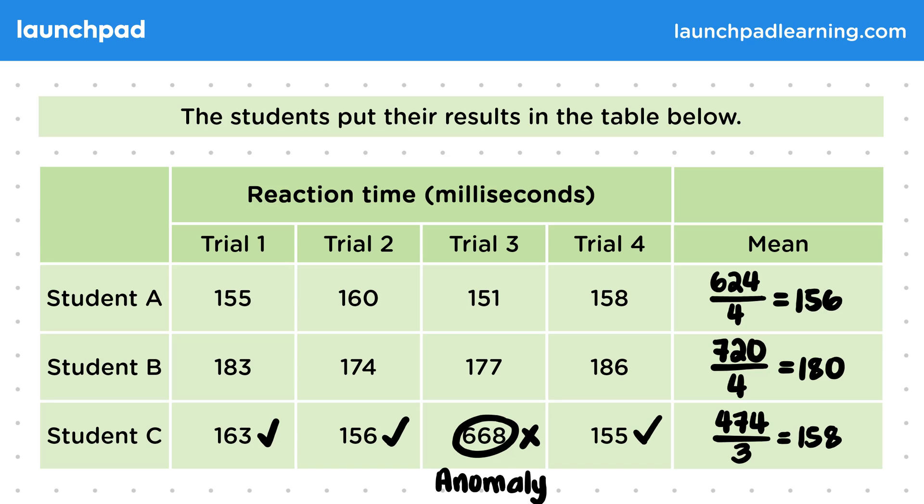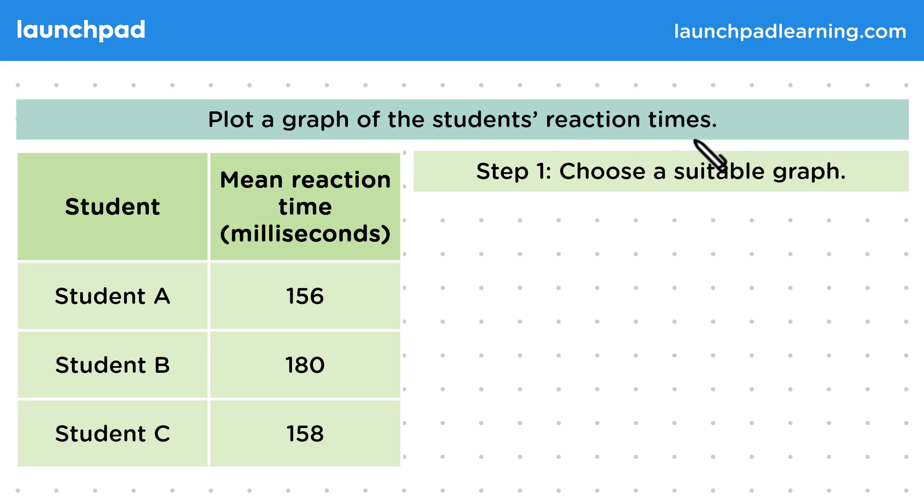Now we've got the means. How can we plot this on a graph? Here's an example of a question that's asking us to plot a graph of the student's reaction times. To plot a graph of the student's reaction times, the first step is to choose a suitable graph.